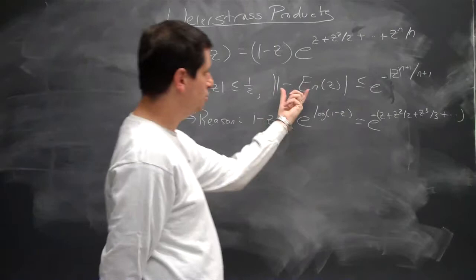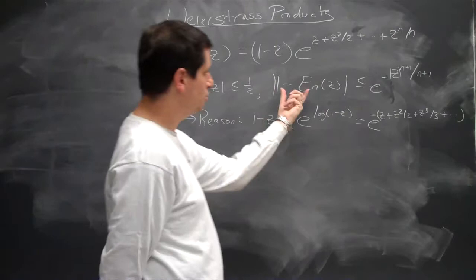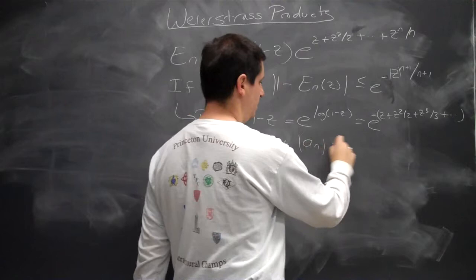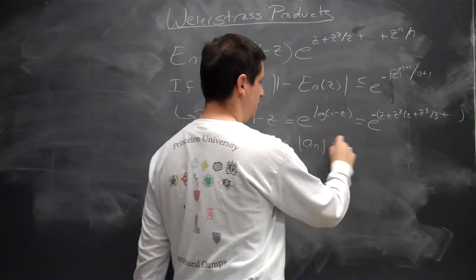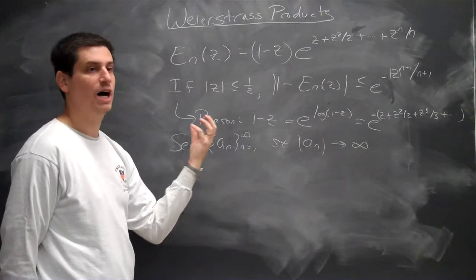So the question is: this is close to 1 — can we show that the product converges? We have a sequence {a_n} such that |a_n| → ∞, and we want to find a function whose only zeros are located at the a_n's.